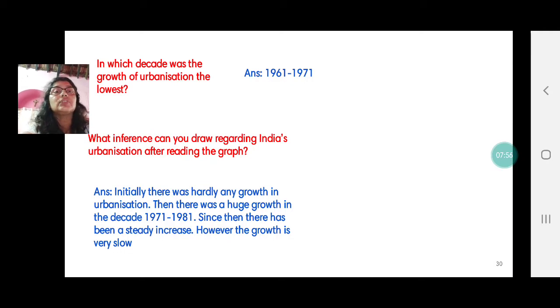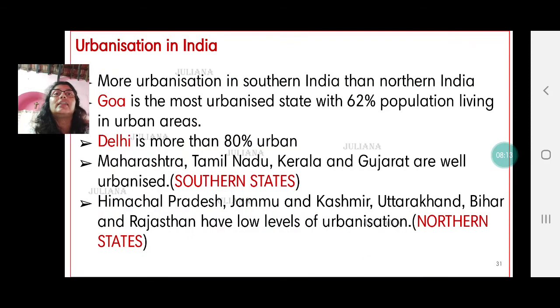However the growth rate has decreased and then in the year 2001 to 2011 the growth rate increased once again to 3.4 percent. However the growth of urban population is not substantial as only 31.2 percent of people are residing in urban areas. That means 68.8 percent of people are still living in rural areas. So here we get a little summary of urbanization in India.